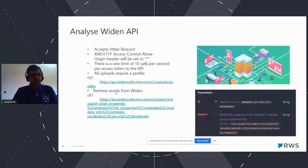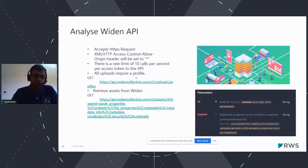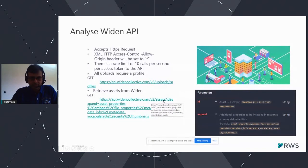Analysis of the Widen API: it is straightforward like any other third-party API. It only accepts HTTPS requests. The XML HTTP access-control-allow-origin header is set. There is a limit of 10 calls per second, which we needed to handle during implementation. All uploads require a profile — not a folder — so whenever we upload any assets from Media Manager to Widen, there is a concept called profile. This is the API request used to upload assets, and this is the GET request used to retrieve assets: the URL ends with /asset/{id}, where the ID is the asset ID of the Widen system.